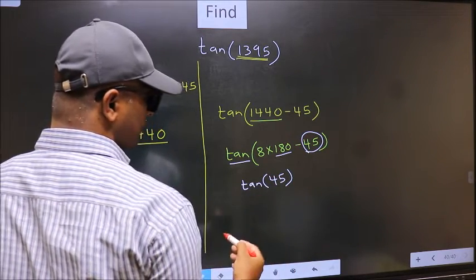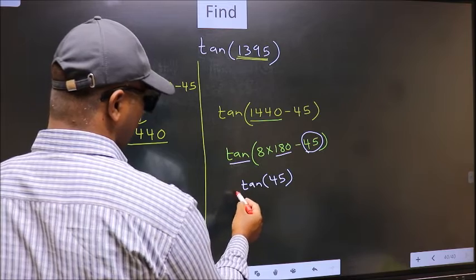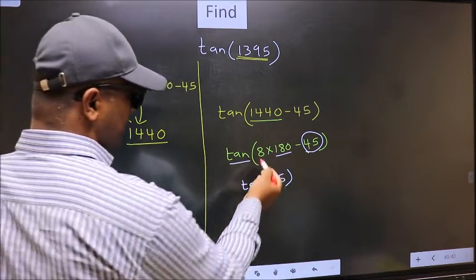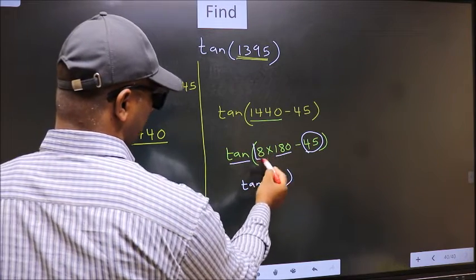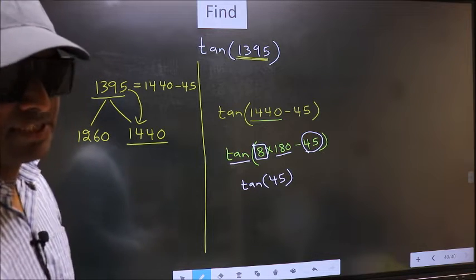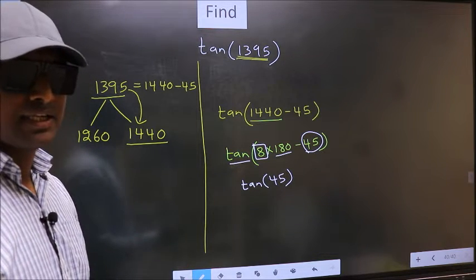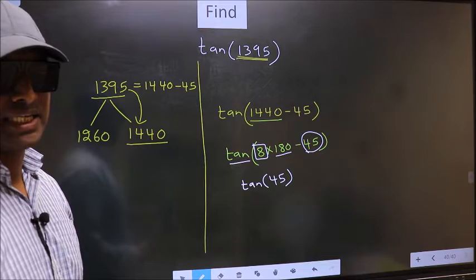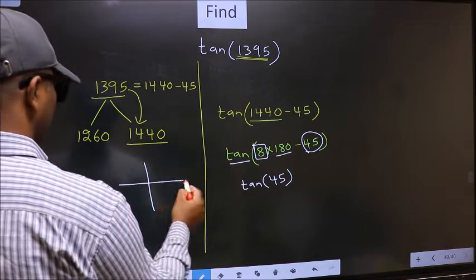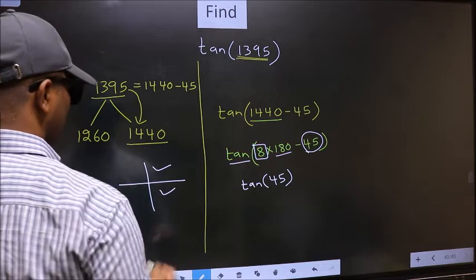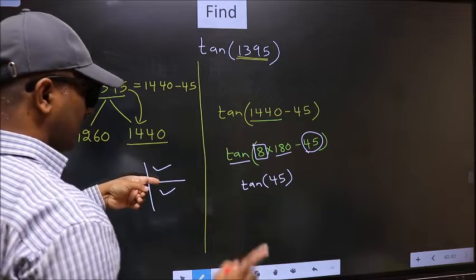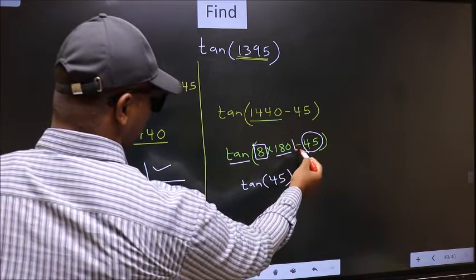Now the question is, will we get here plus or minus? To answer that, we should look at the number before 180. That is 8, and 8 is even. And all the even multiples of 180, they lie either in the first or in the fourth quadrant. So now, to select the quadrant, we should look at this symbol.